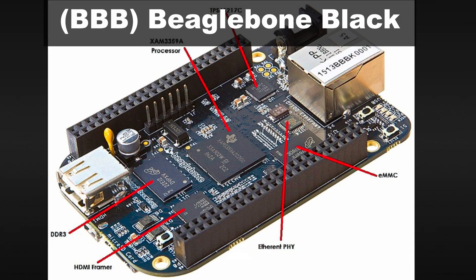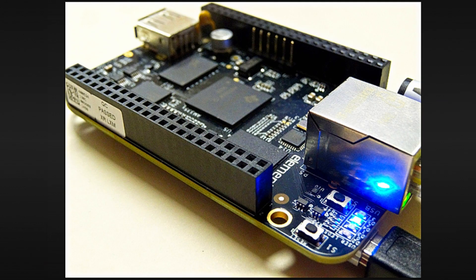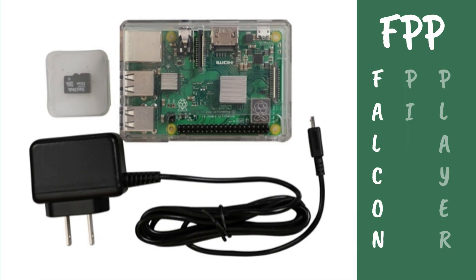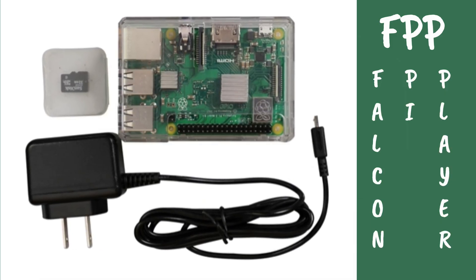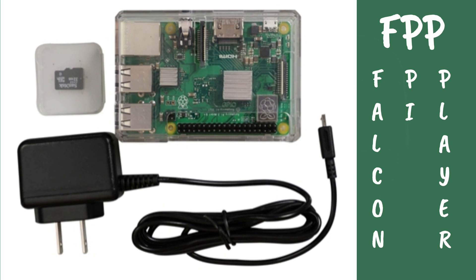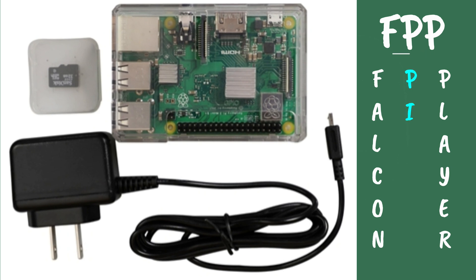Beagle Bone Black is a low-cost, community-supported development platform for developers and hobbyists. It boots Linux in under 10 seconds and you can get started on development in less than five minutes with just a single USB cable. It is used as the base operating system on controllers or to run your show. A Pocket Beagle is an ultra-tiny yet completely open-source USB key fob computer. Falcon Pi Player is a lightweight, optimized, feature-rich sequence player designed to run on low-cost single-board computers. It was originally created to run on the $35 Raspberry Pi — hence the middle 'P' in the short name — and also works with Beagle Bone Black.